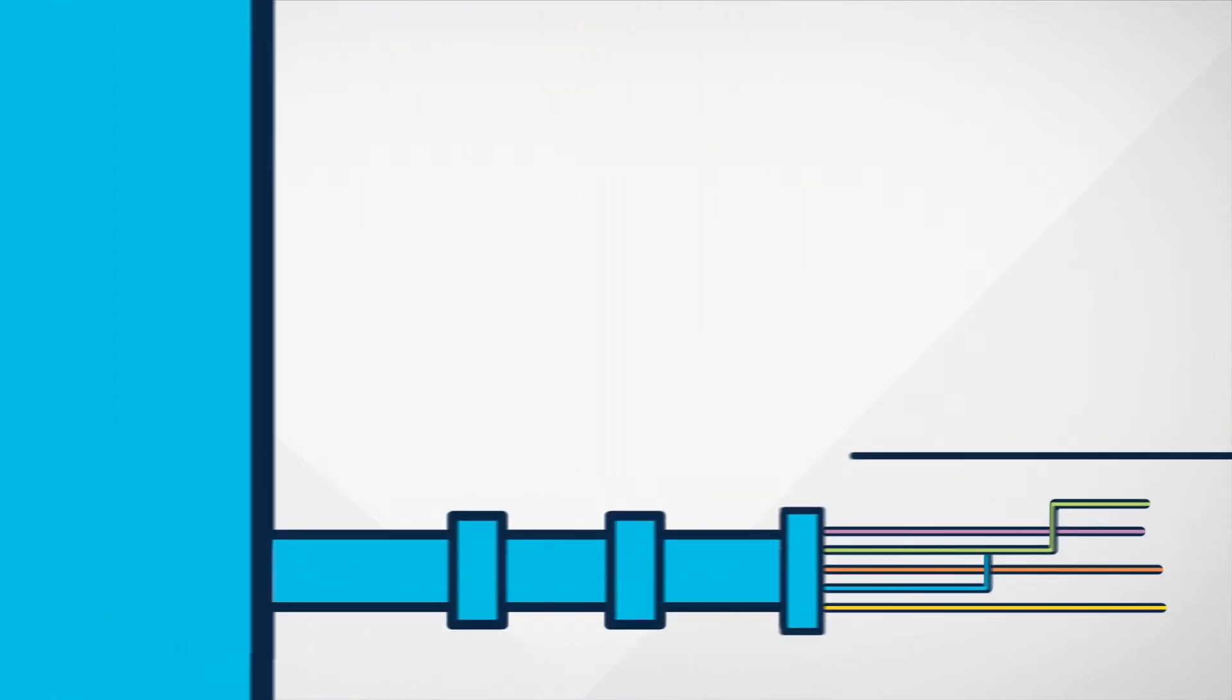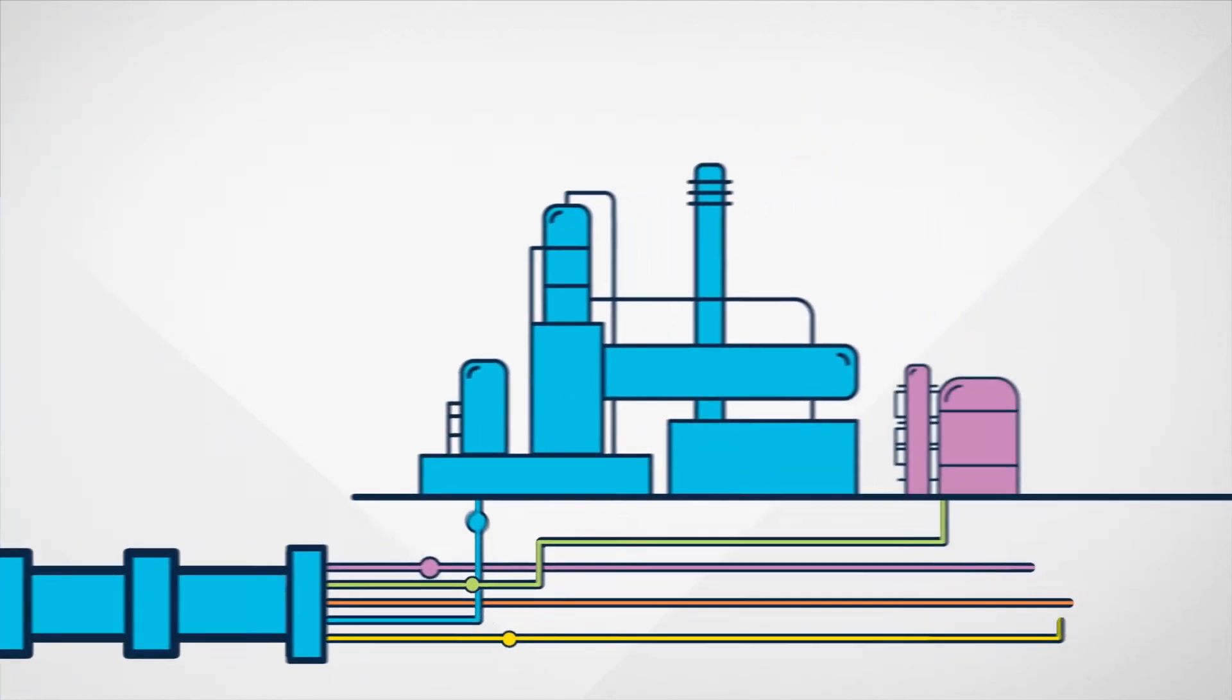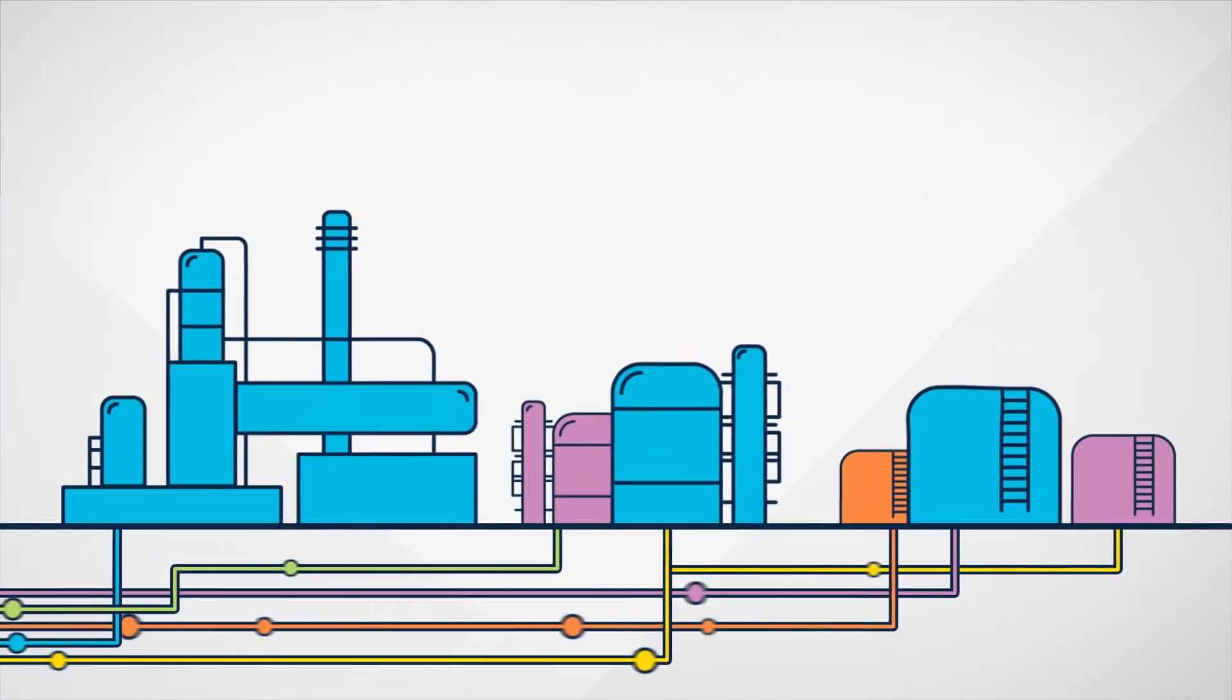A complex system of pipes then transports the fuels around the refinery, keeping them separate and directing them either to storage or for further processing.